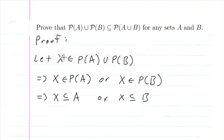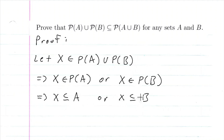Notice that from at least this statement to this statement, I could have used if-and-only-ifs. But again, I'm only using implies because that's what the problem is asking for. So now I'm at a point where I have X is a subset of A or X is a subset of B. From these two, I want to get to X is an element of the power set of A union B, and it's going to be broken down into two cases.